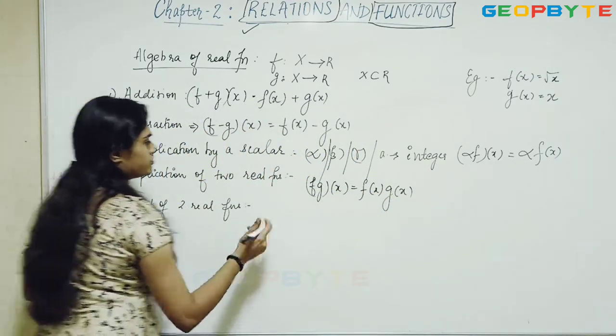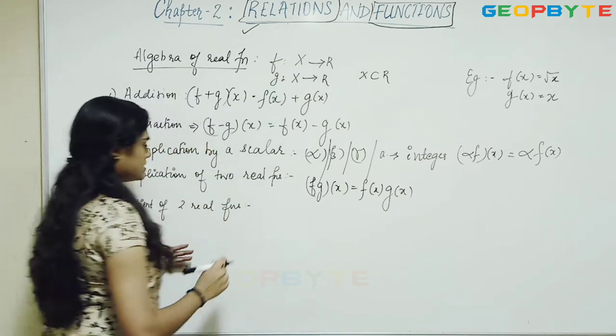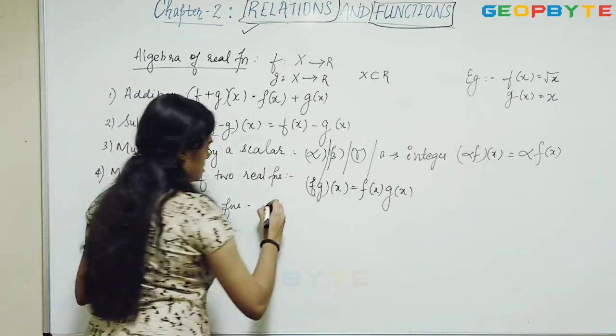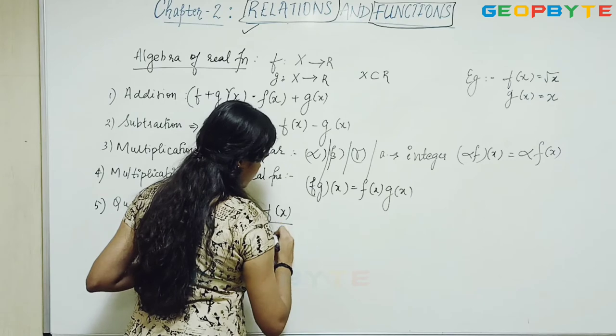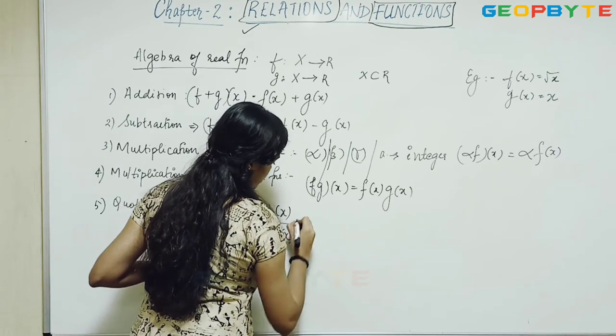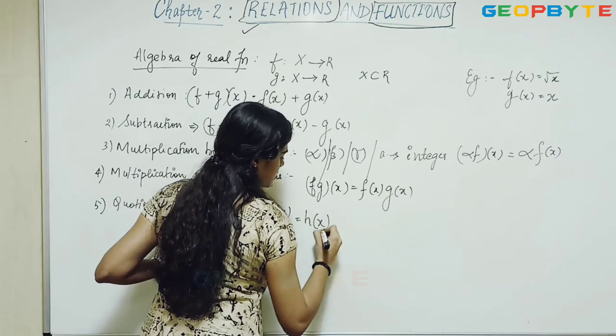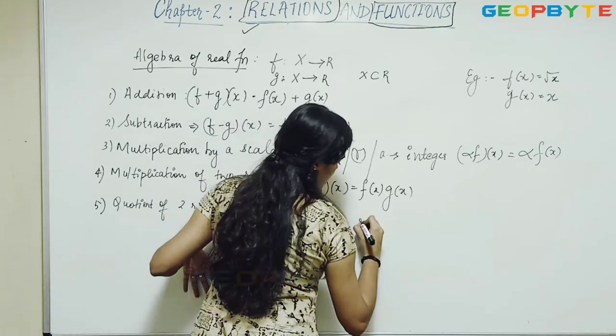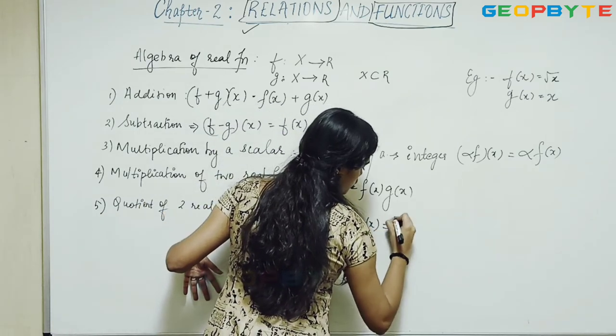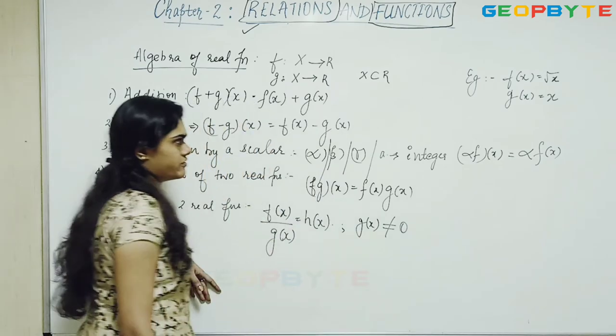So, what is the quotient of two real functions? That is, f of x divided by g of x is equal to my some other function, h of x, where my g of x should not be equal to 0. If it's 0, it's not defined.